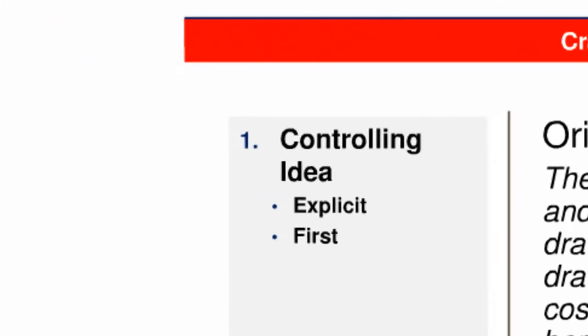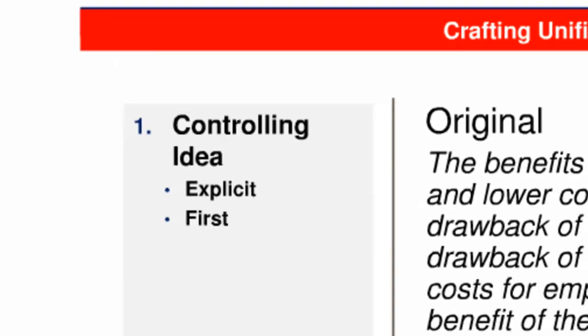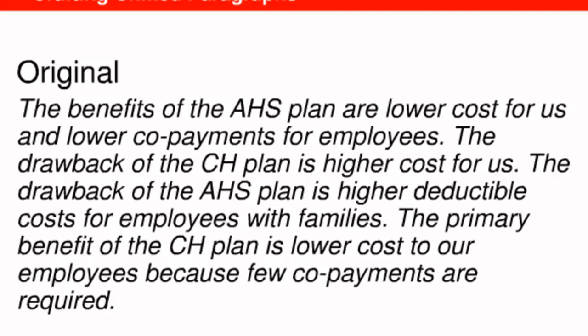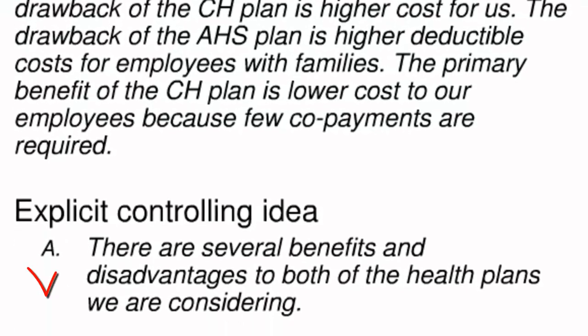The first principle you need to understand to create unified paragraphs is the controlling idea. Consider this paragraph from the memo about options for health insurance plans. What's the controlling idea here? You probably struggled to identify it. That's because the writer did not actually state it. Usually this happens because it's clear to the writer what the point is, and he or she is not thinking of how differently their reader will approach the same information. To increase the reader's readiness to accept his message, the writer should provide an explicit controlling idea, like the one shown here in A.